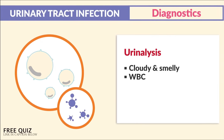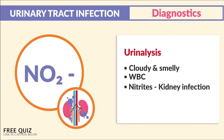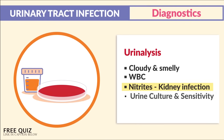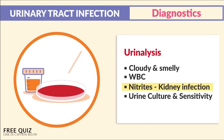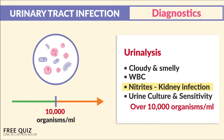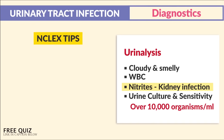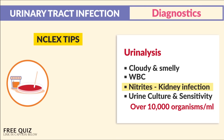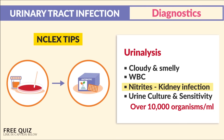On the UA, we'll see cloudy and smelly urine filled with WBCs — those white blood cells that indicate a general infection. A key term here is nitrites, which indicates a kidney infection. A urine culture and sensitivity test can also be ordered; over 10,000 organisms per mL indicates a UTI, anything less is typically normal.